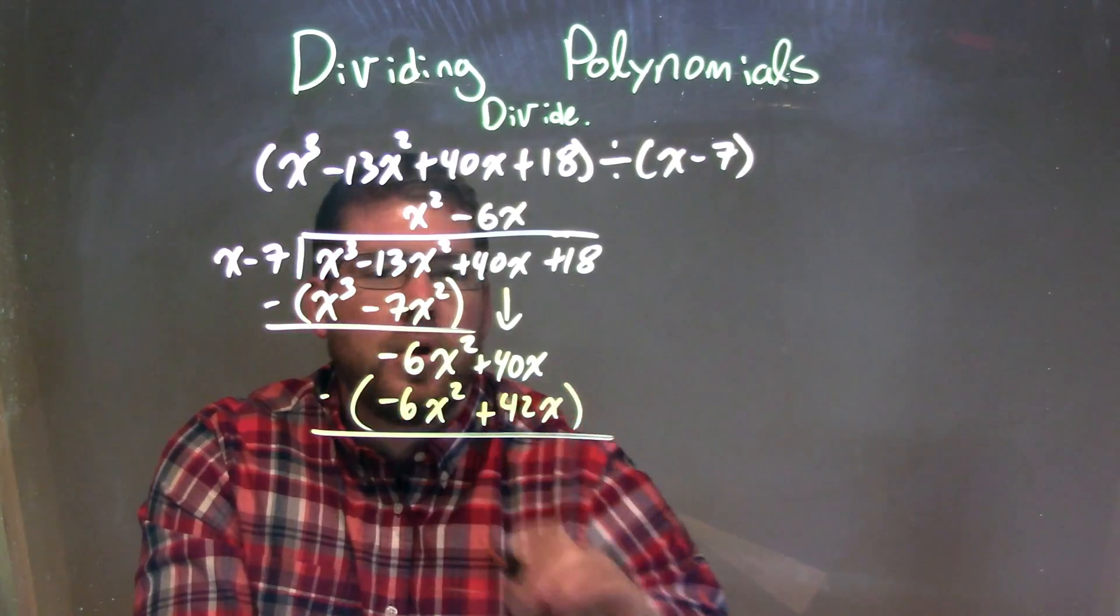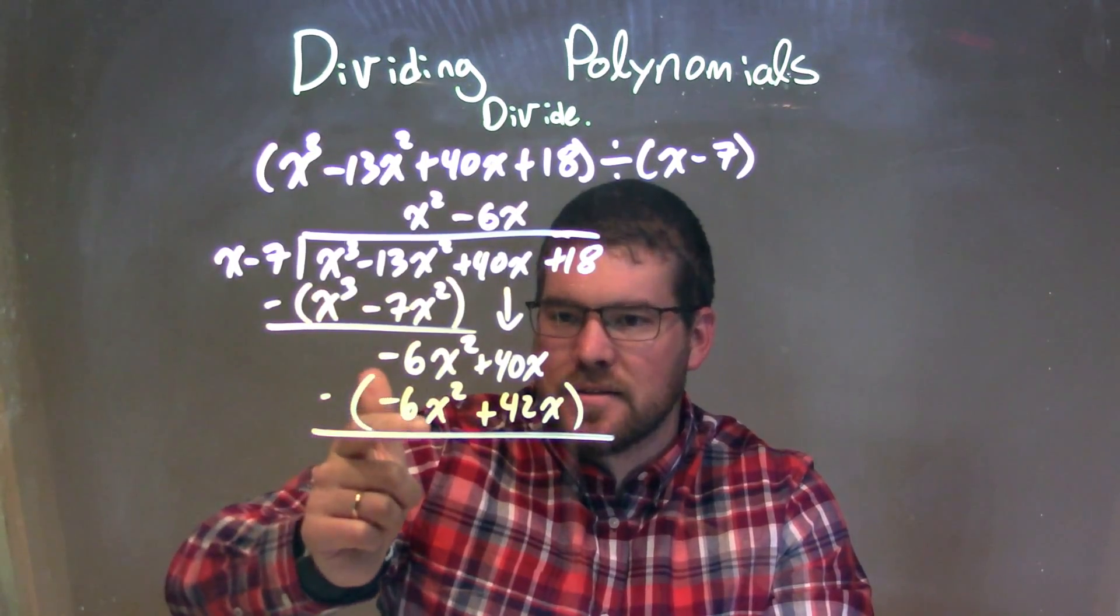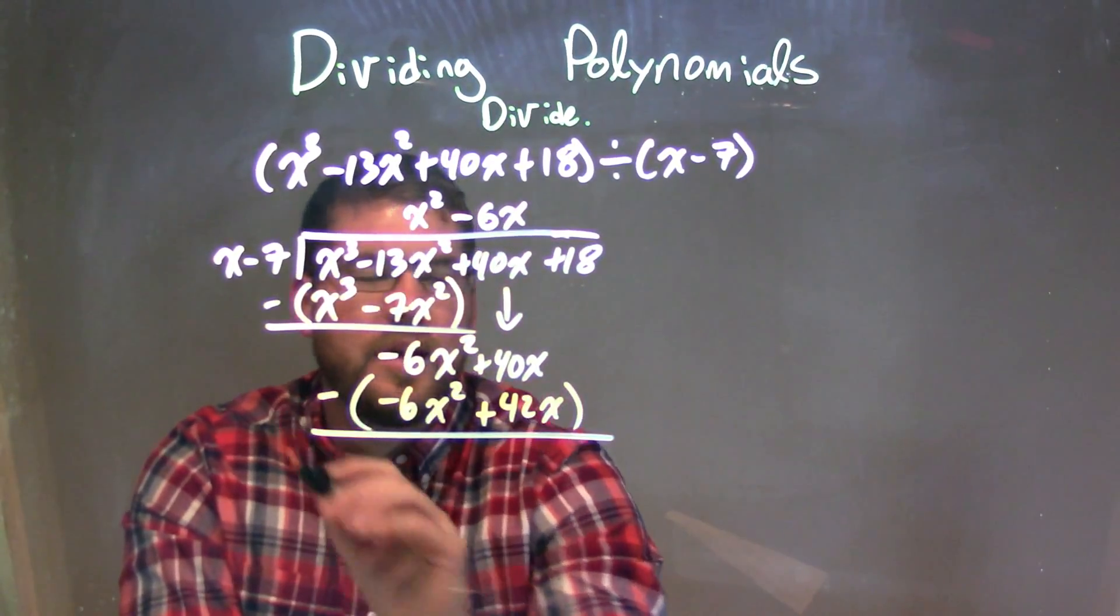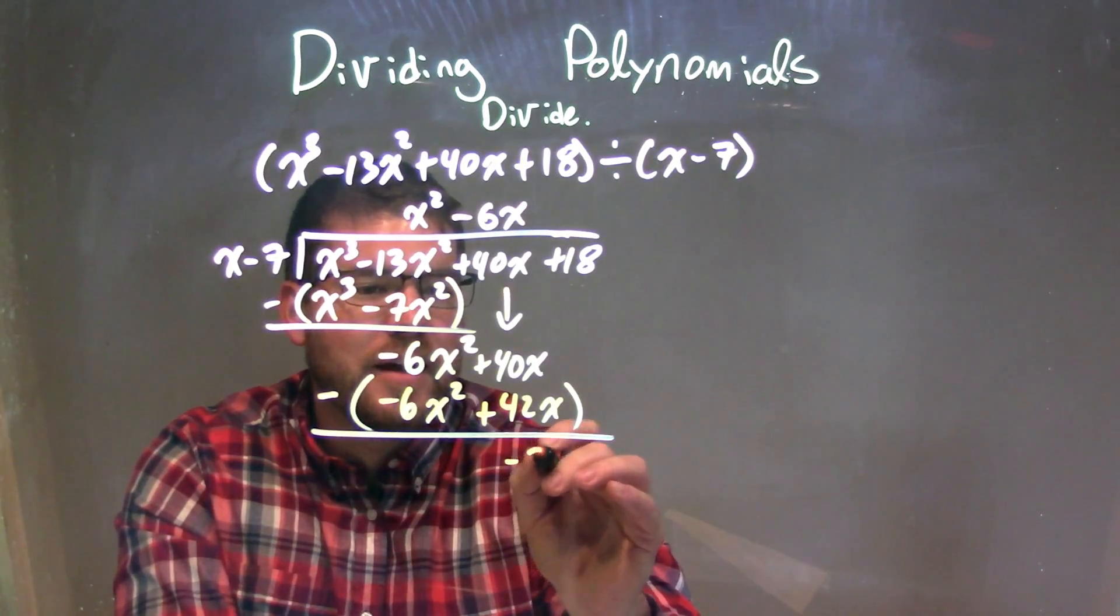We subtract them with parentheses. Minus 6x squared minus a negative 6x squared is like adding a positive, becomes zero. 40x minus 42x is just a negative 2x.